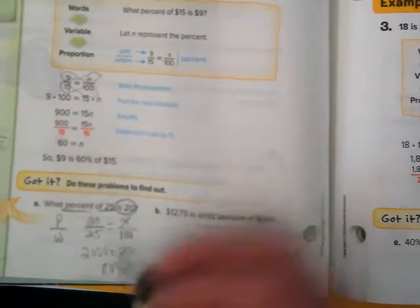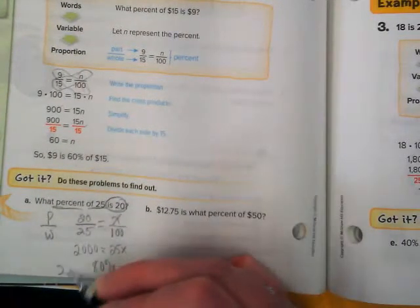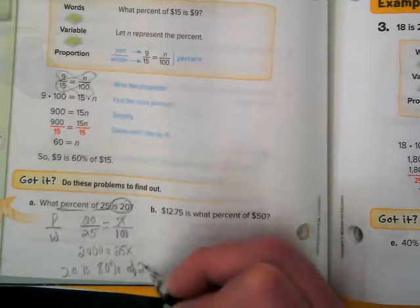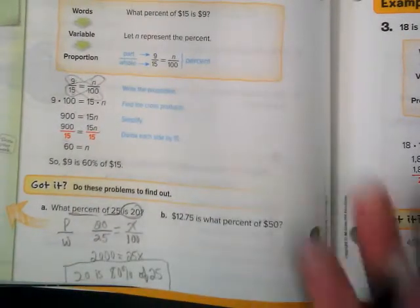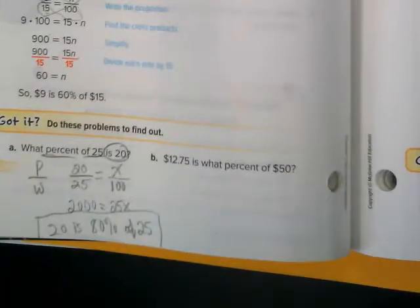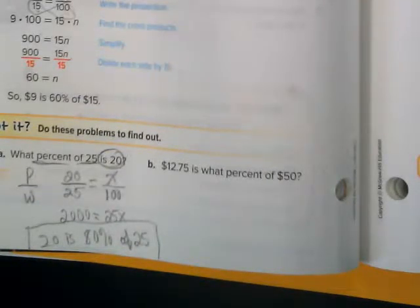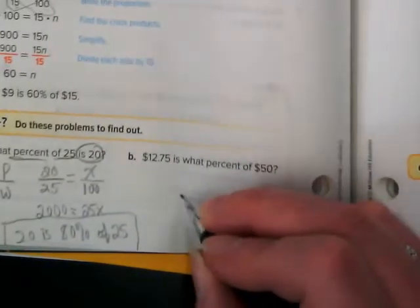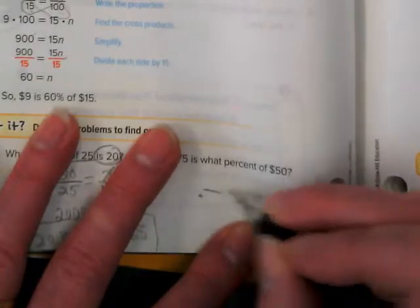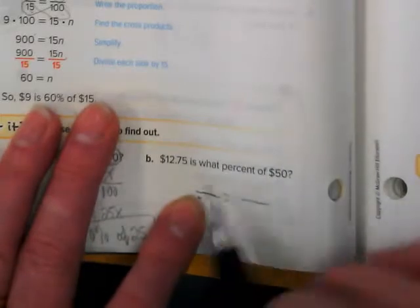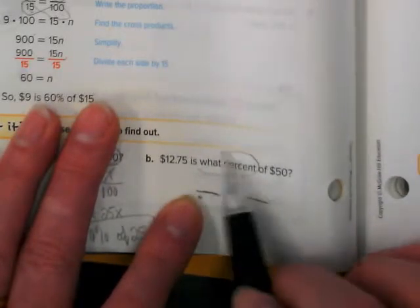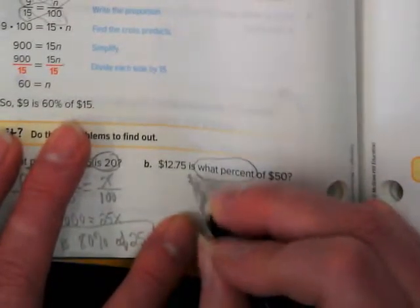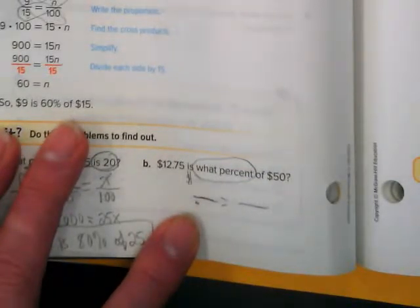80%. 80 percent is our answer. So 20 is 80 percent of 25. We have to turn these back into sentence answers, but we can use numbers as our answer in the sentence. I want you guys to try to set up B on your own: $12.75 is what percent of $50?